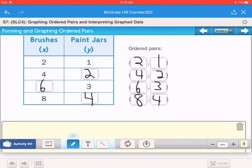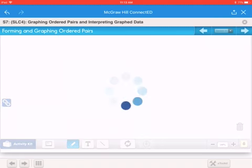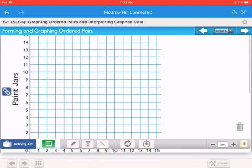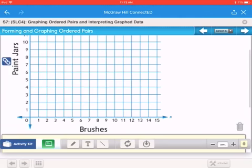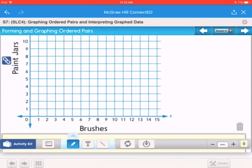We'll move on to graphing them. So as we graph these, the first one said two brushes and one paint jar. So it's two over and one up, which is right about there. The next one was four over, so four paintbrushes and two jars. So it's four over and two up.